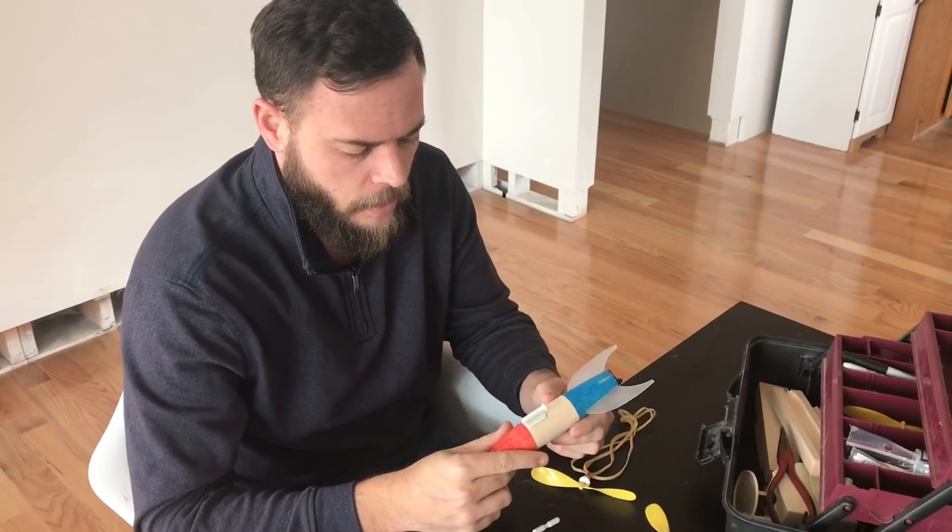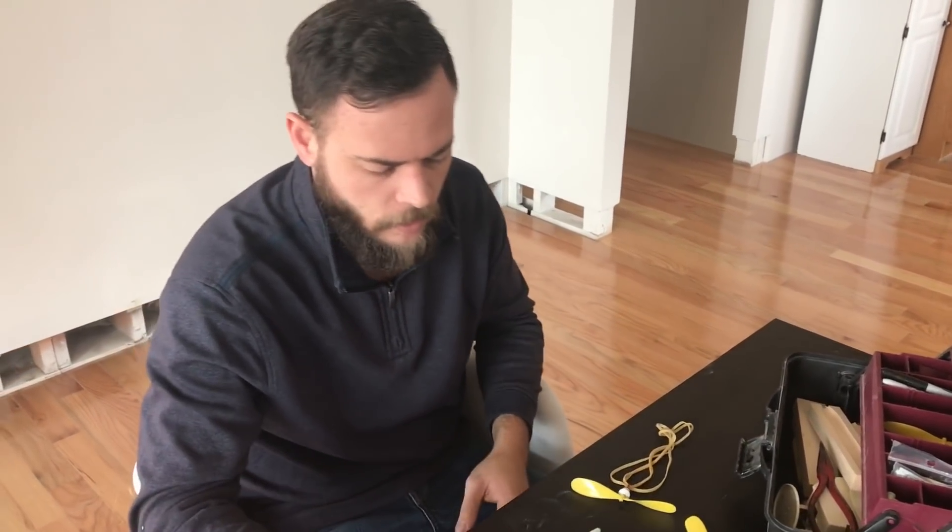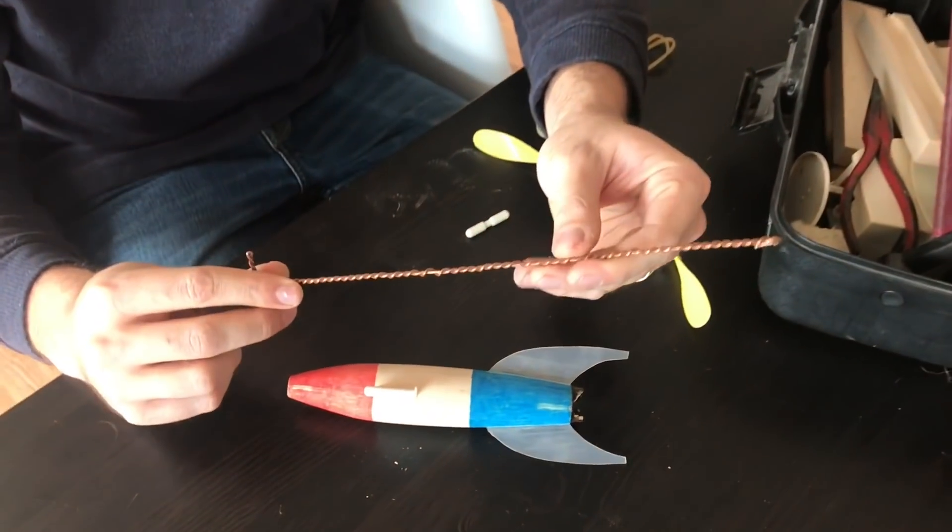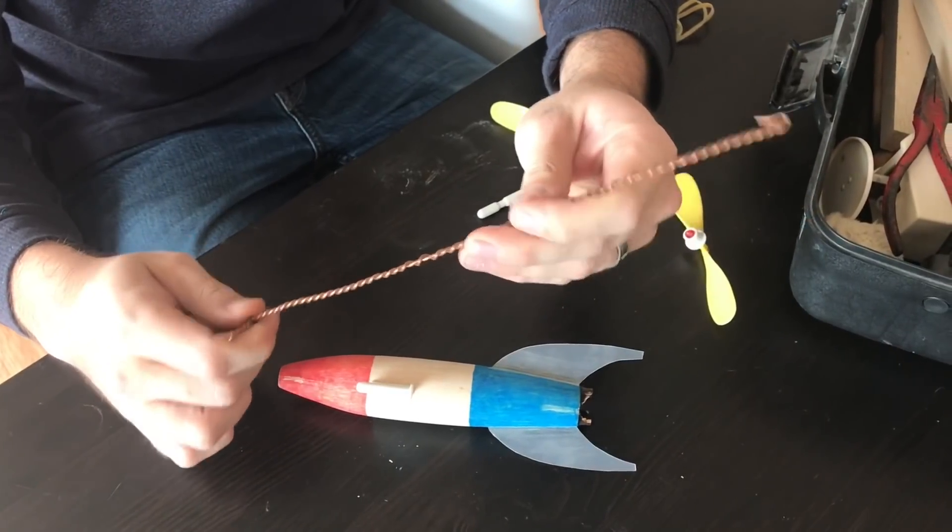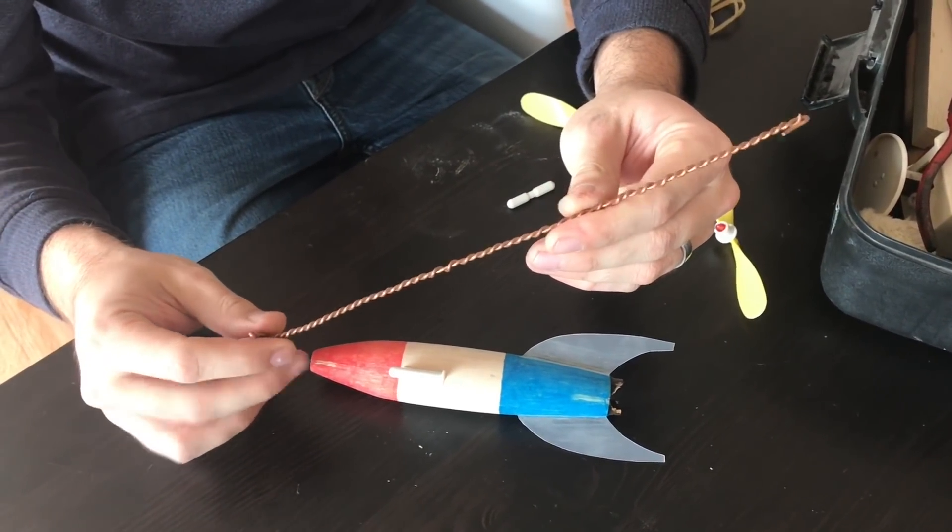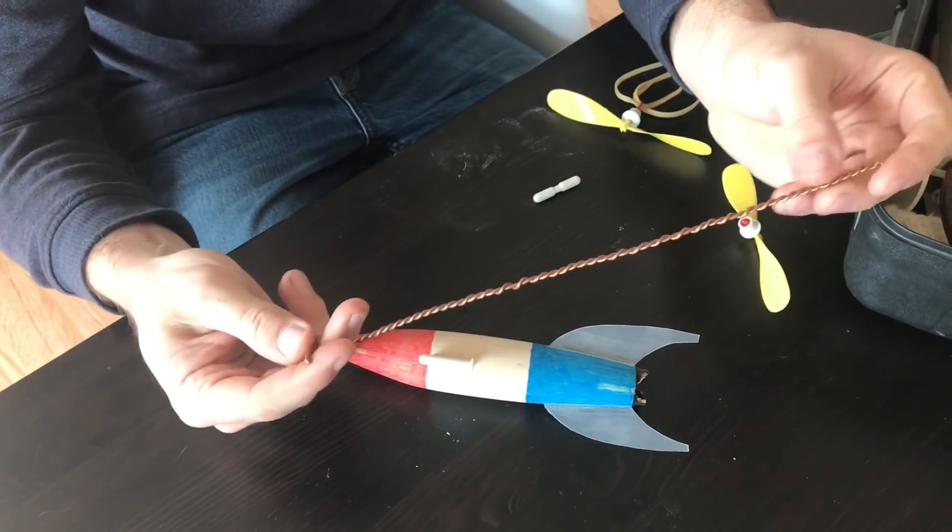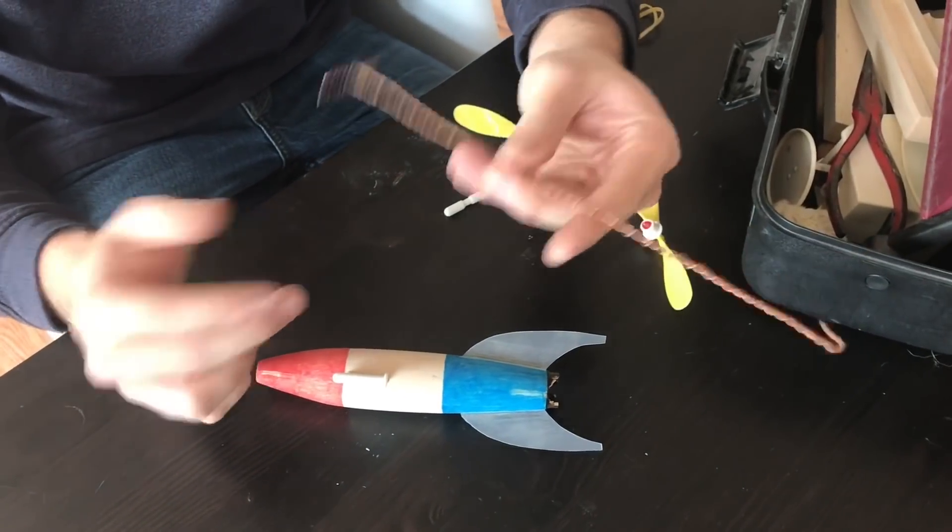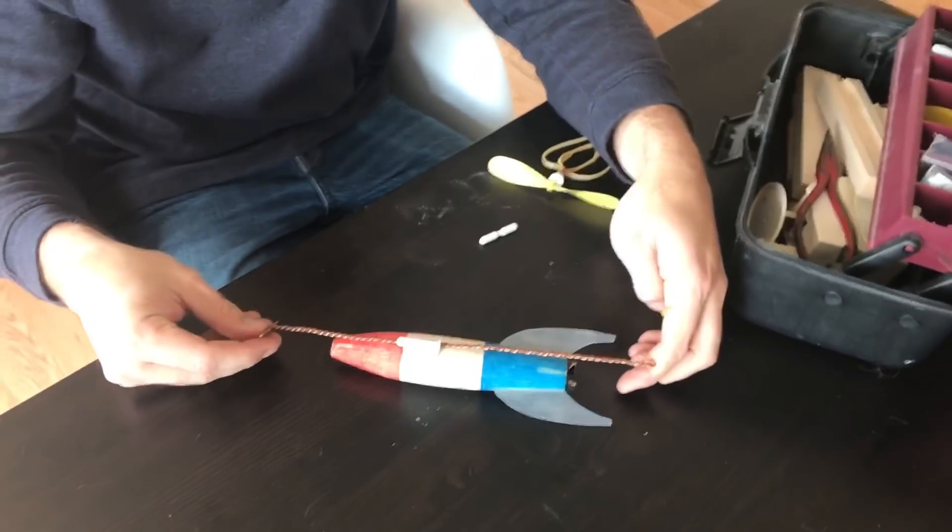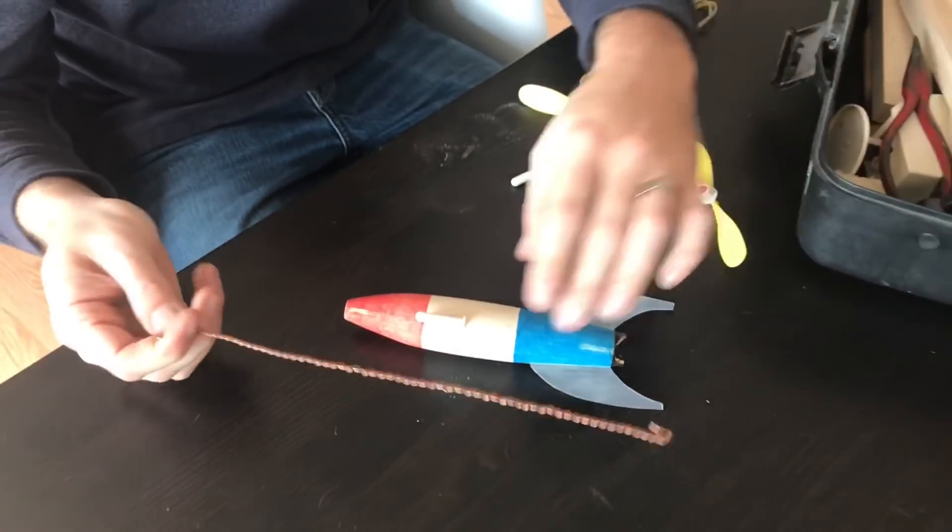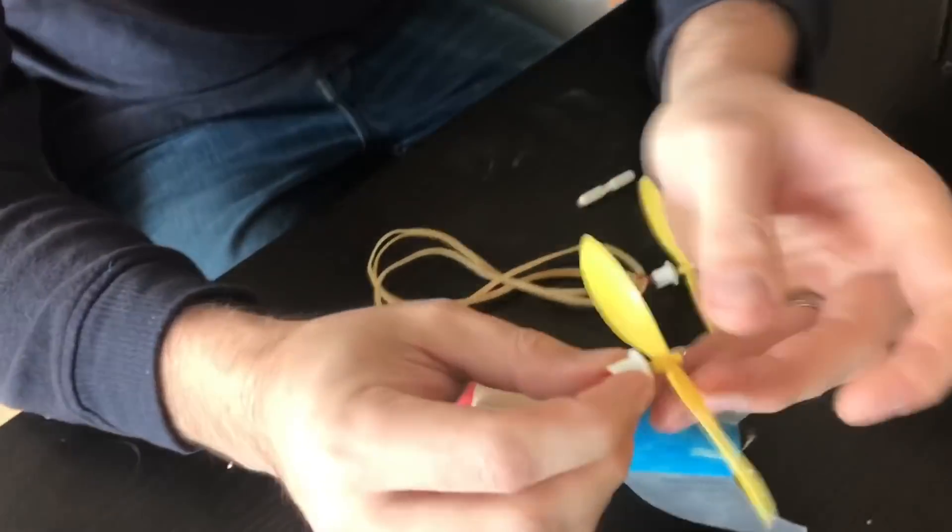As we get ready to assemble the rocket, I want to go over a couple quick things. One is, this is a little tool we made for threading the bands through the rocket. It's nothing complicated. This is just a piece of copper wire that we twisted up. It's got a little hook on this end and it's got a tee that we can pull against on the other end. I've seen these made out of coat hangers, all different things, but you want to make sure it's long enough that you can get all the way through the body of the rocket. And it doesn't need to be anything expensive or complicated. We've already gone over how we assembled this.